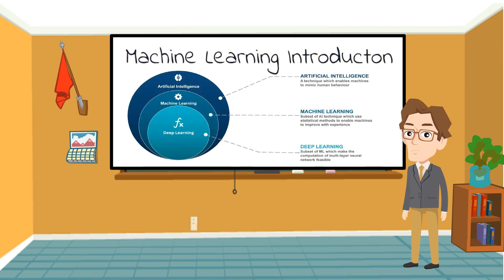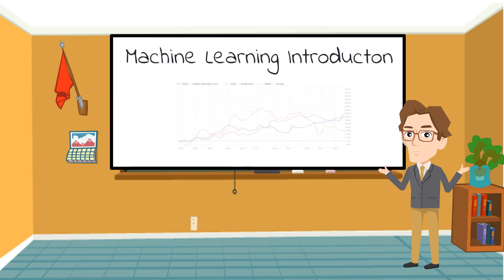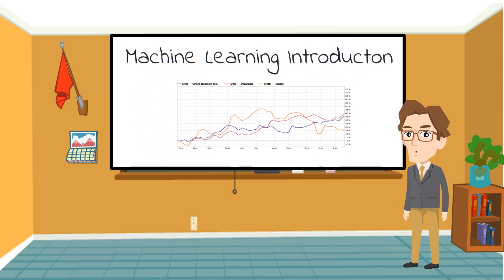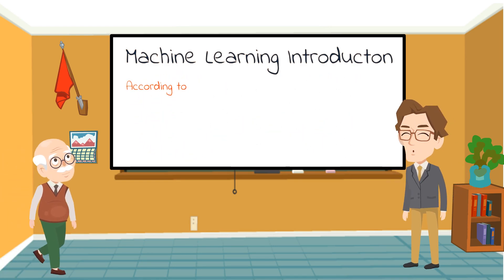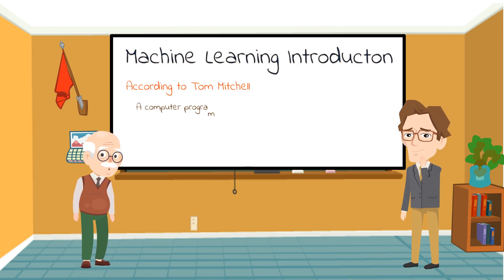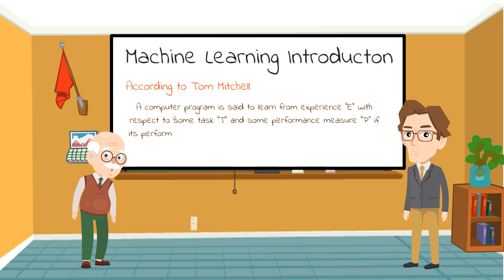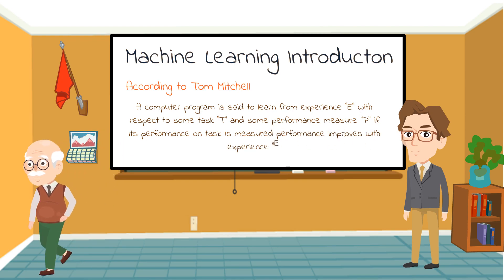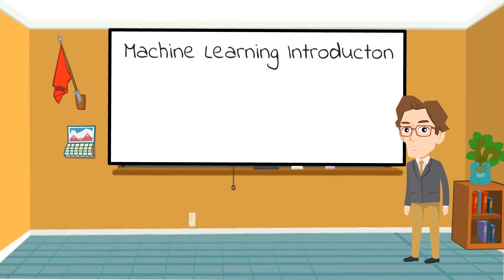...is not making robots like Terminator, but learning algorithms that make our predictions better. According to Tom Mitchell, a computer program is said to learn from experience E with respect to some task T and some performance measure P, if its performance on T improves with experience E. Seems confusing? Let's make it simple.